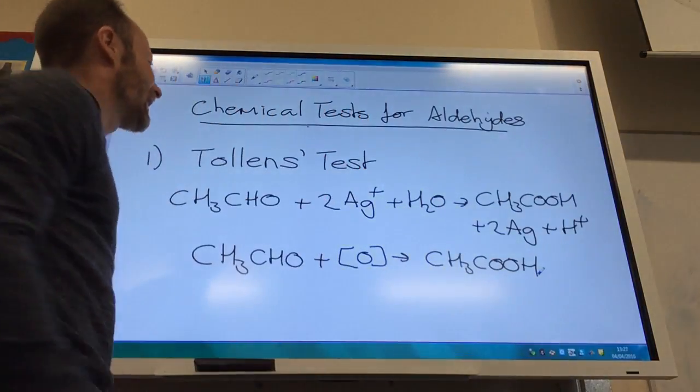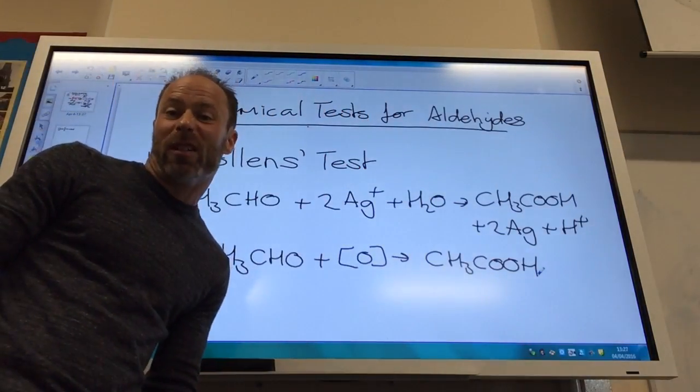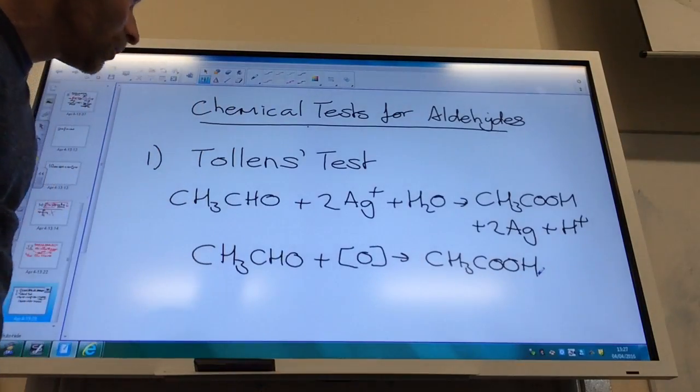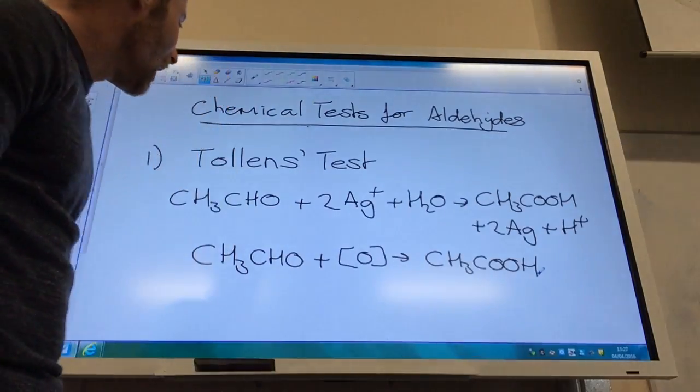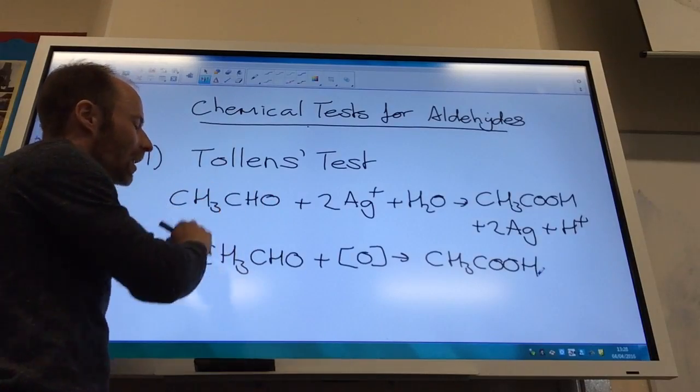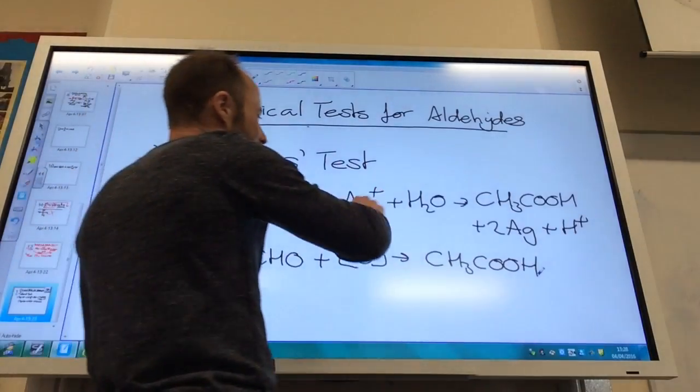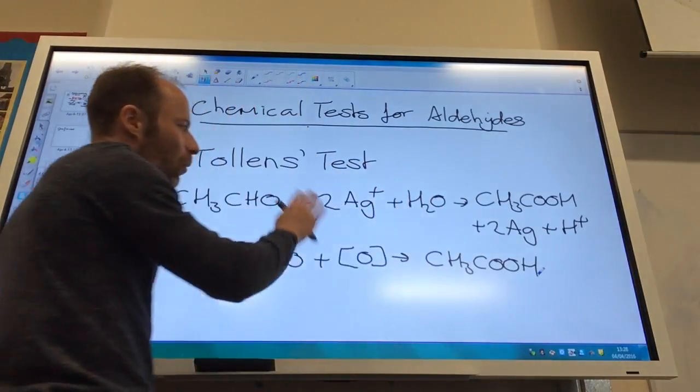The first one is called Tollens test. Tollens test is quite nice, the nicest one really. Why is it so nice? Because it uses silver. So you take your aldehyde, this is called ethanol, and you use silver ions and you also need water.